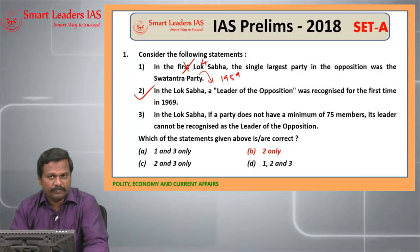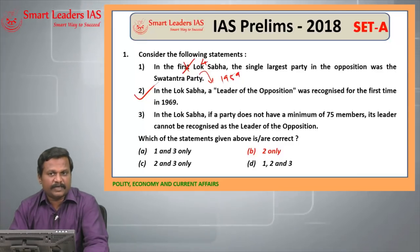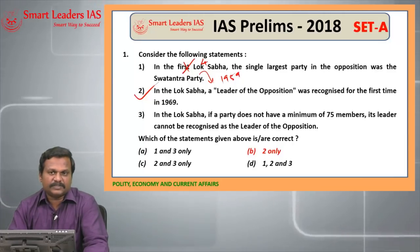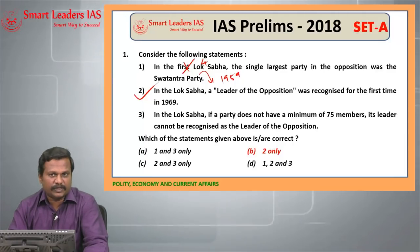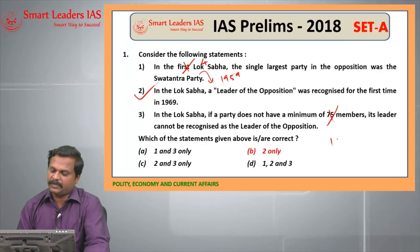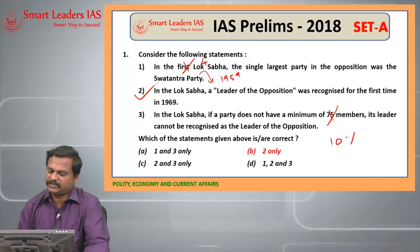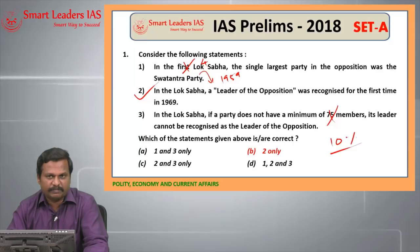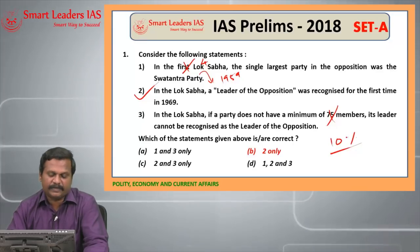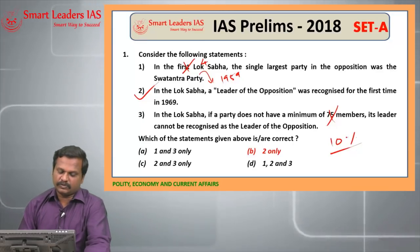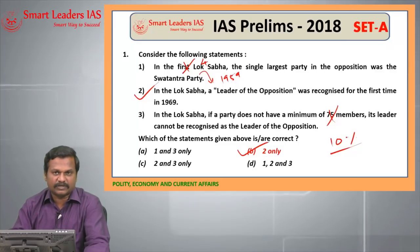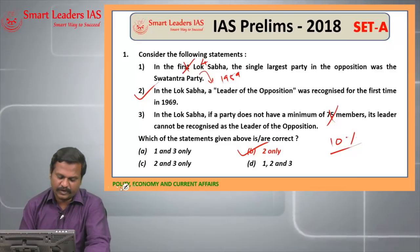Ramsbha Singh of Indian National Congress was recognized as LOP for the first time in 1969. A statutory status for LOP was given by a parliamentary act in 1977. For becoming LOP, the party should have 10% of the total MPs — so this is a wrong statement; 10% of total strength of the house is the criteria. So the answer is 2 only.